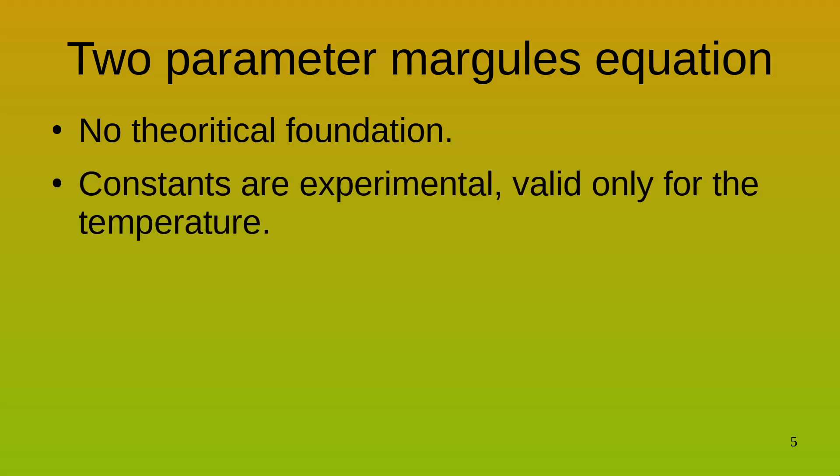Therefore, we need to understand one thing that the constants that we get for the VLE, that is A12 and A21, are going to be experimental. Each time when we get fresh data on some other temperature, we will have to again do this entire process and get the value of A21 and A12. Therefore, it is understood that it is only valid for the temperature at which the experiment was performed.